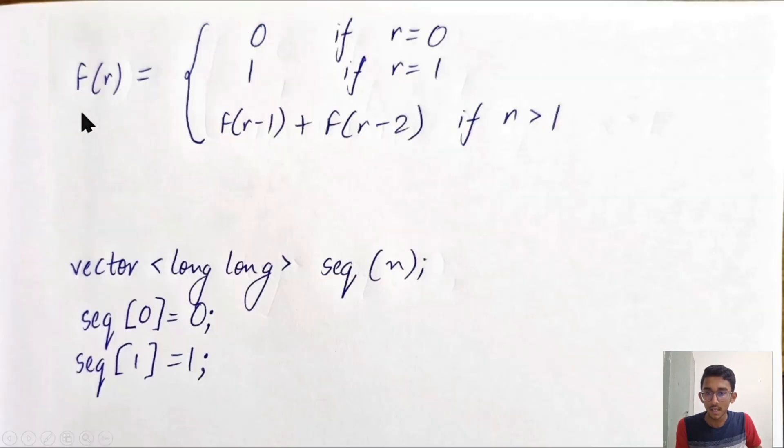So mathematically, this can be written as a piecewise function. F(r) is 0 for r equal to 0, 1 for r equal to 1, and F(r-1) plus F(r-2), which is basically the sum of the last two terms if r is greater than 1.